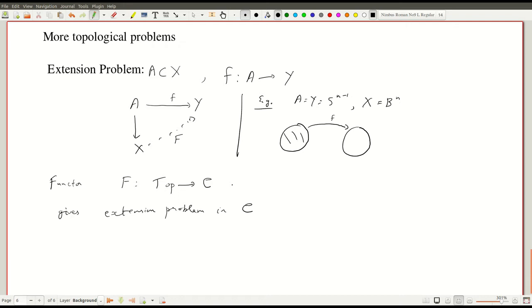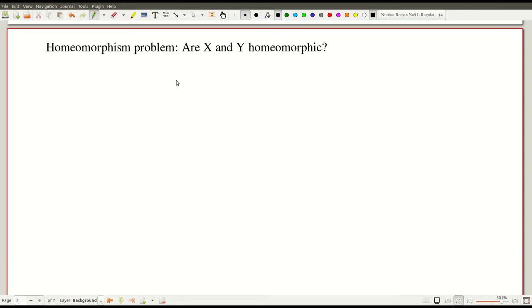But first we will see what is sometimes considered the most fundamental problem in topology. Sometimes you would say that the most fundamental question in topology is: given two spaces X and Y, are X and Y homeomorphic? Now how does one even formulate this in terms of commutative diagrams? We want a map from X to Y, we will call this f, and we want a map from Y to X, we can call it g.